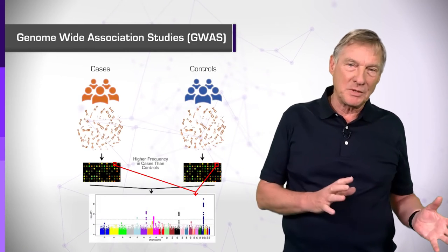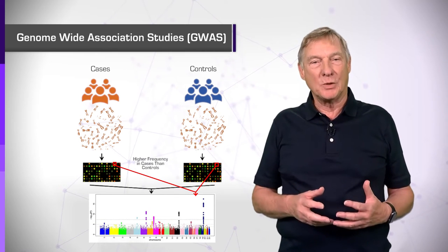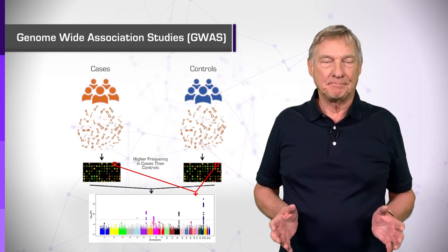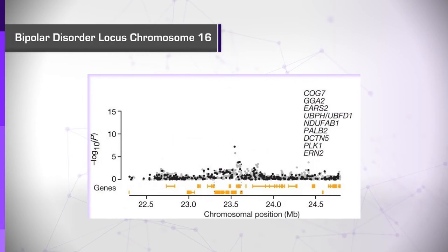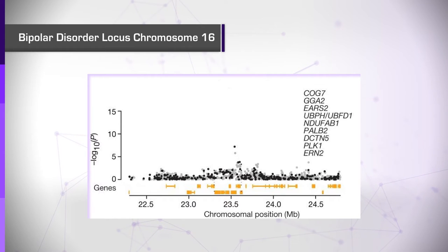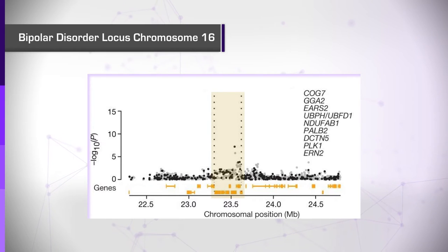Statistically different frequency of a SNP in case and control samples implicates that locus as associated with the disease in some way. The figure shows an example of how these data look for one locus. The black dots show the probability that each measured SNP is correlated with the trait, and the grey dots show the probabilities for the imputed SNPs.